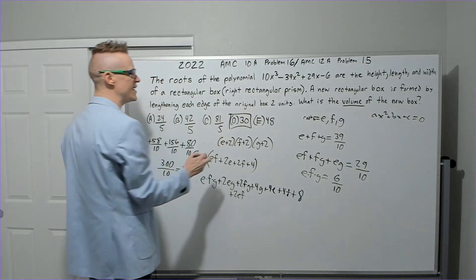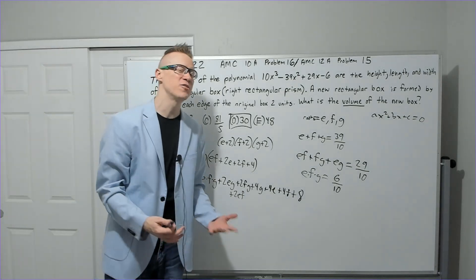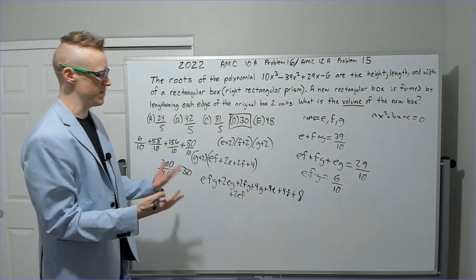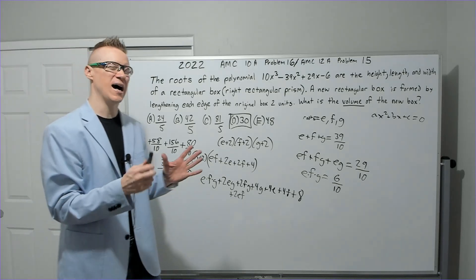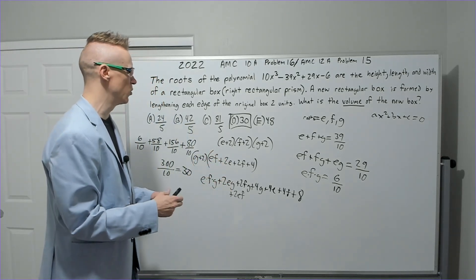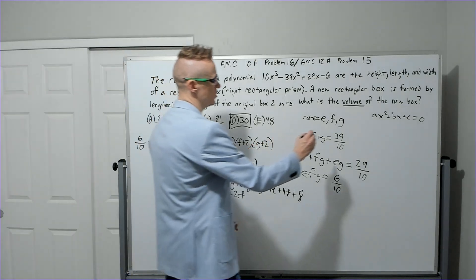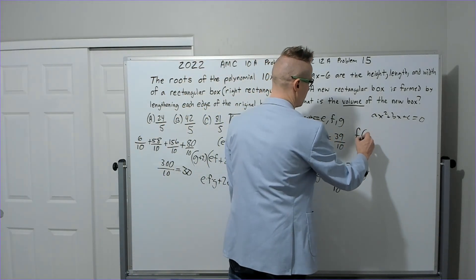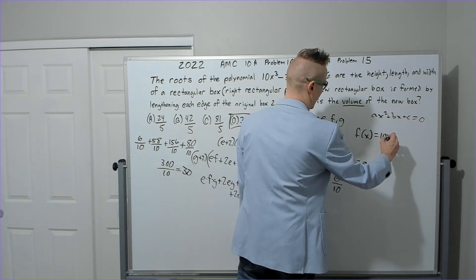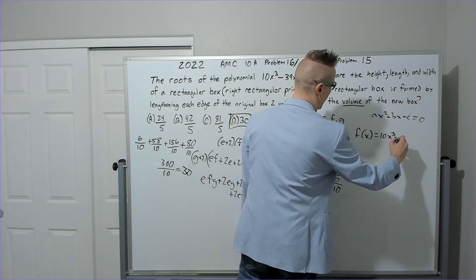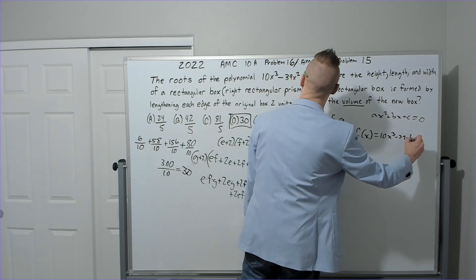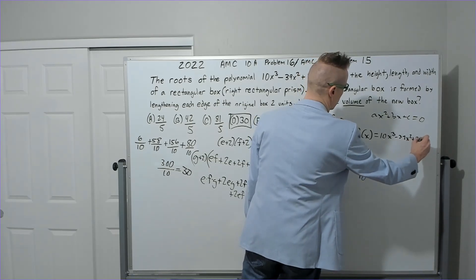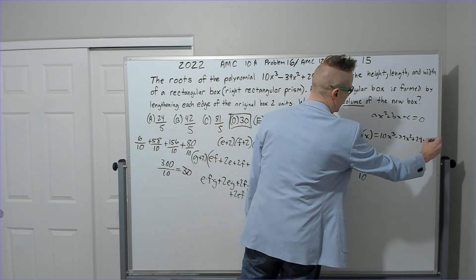Now there is another way to do this. I just didn't feel comfortable with it—though I kind of thought maybe, but I didn't feel like I wasn't 100% sure that it was going to work. The idea would be that you make this into function notation: 10x³ - 39x² + 29x - 6.